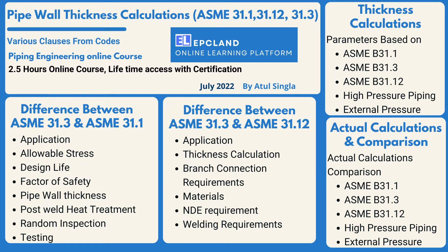We will start with some important factors where we'll compare the process piping code and power plant code — 31.3 and 31.1. We will look into a few parameters with respect to application, allowable stress, design life, factor of safety, pipe wall thickness, post weld heat treatment, random inspection, and testing requirements, to understand the major differences between these two codes.